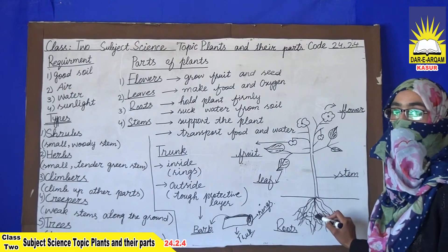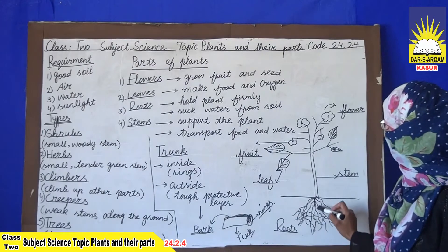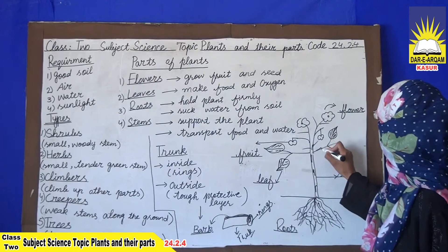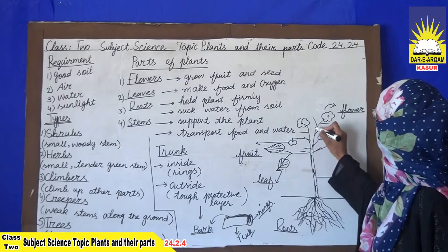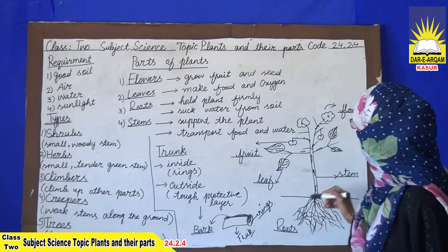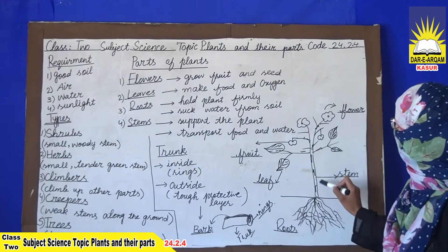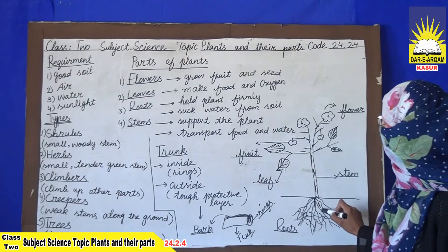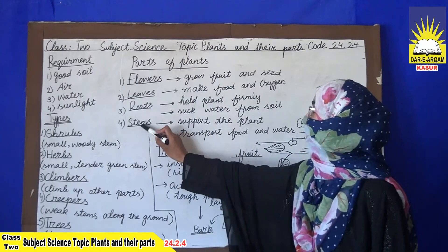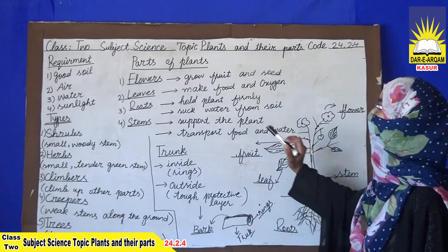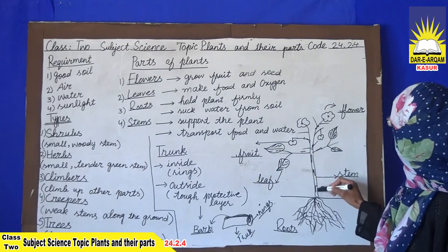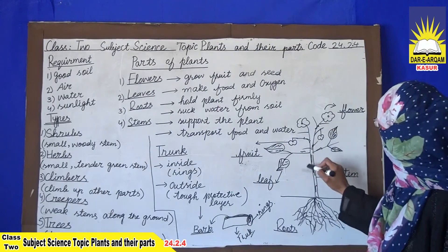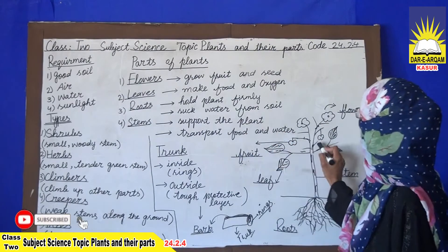Roots are a major and important part of the plant. They play an important role in the plant's survival. Roots suck up water from the soil like straws, and that water travels to all parts of the plant — leaves, fruits, and branches. Roots also hold the plant firmly in the soil.